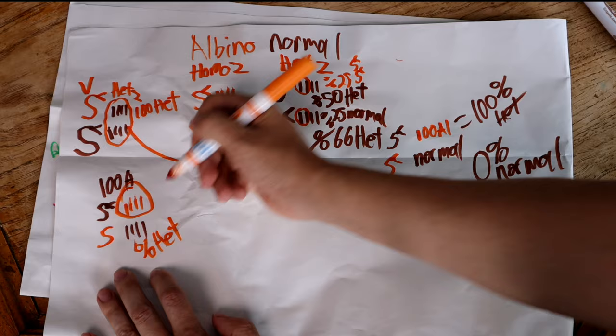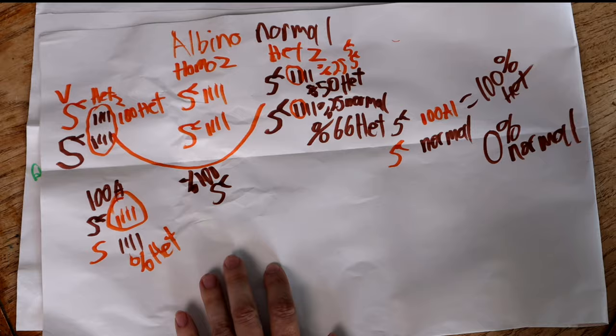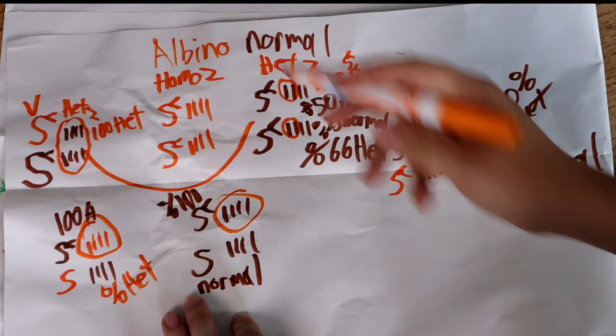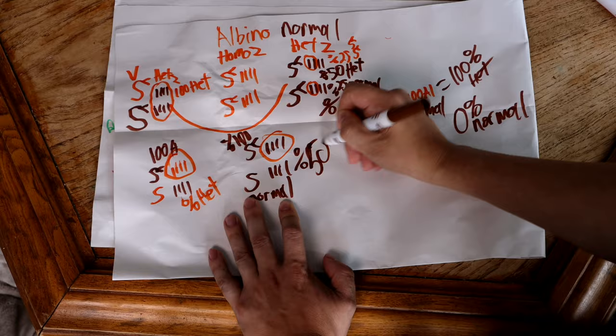Now if we take that same 100% het snake and breed it to a snake that is just a normal — not carrying anything — what we're going to end up getting is all normals, and about 50% of them will be carrying albino. So that litter will be sold as 50% het albino.